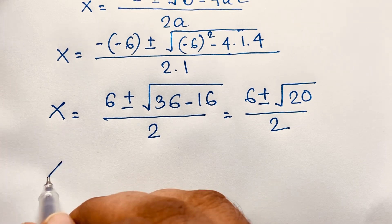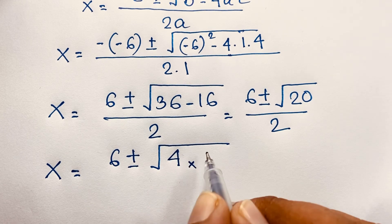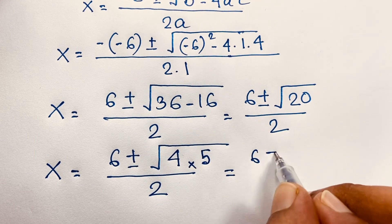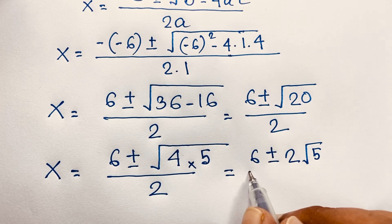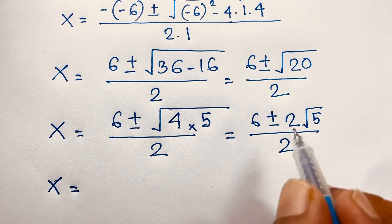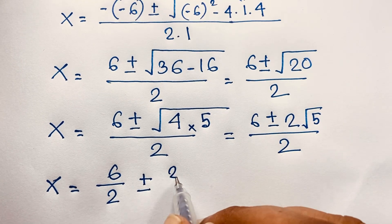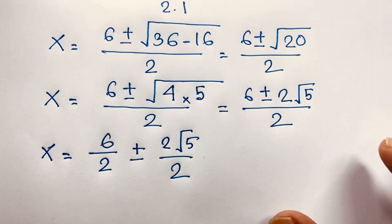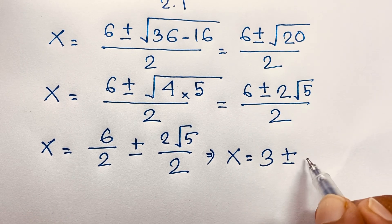We find x equals 6 plus or minus square root of 20. Since 20 is 4 times 5, the square root of 20 is 2 root 5. So x equals 6 plus or minus 2 root 5, all over 2. Separating the fraction: 6 over 2 plus or minus 2 root 5 over 2, which gives x equals 3 plus or minus square root 5. This is our final solution for x.